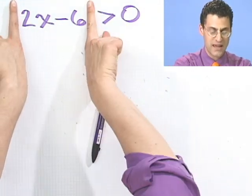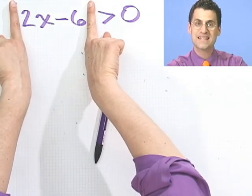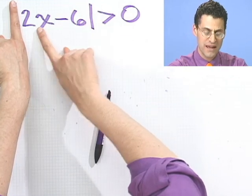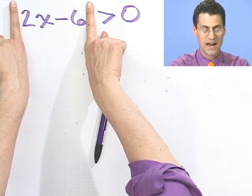Well, that means that this inside thing could be any number at all as long as it's not 0 itself. So what would make this thing 0? Well, x equals 3.